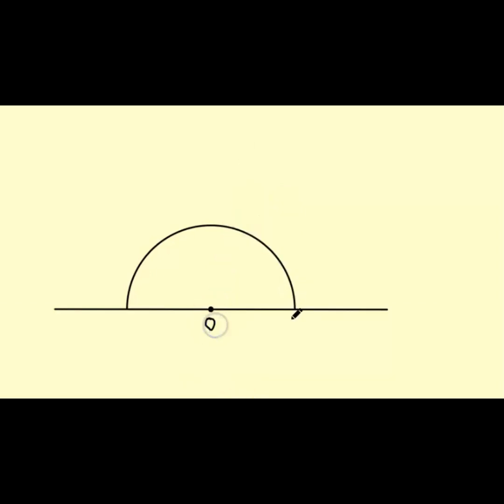The center is O, and the two intersecting points of the semicircle with the line are A and B. Again take the compass, and without changing the radius, draw an arc on the semicircle from point A and mark it as C.